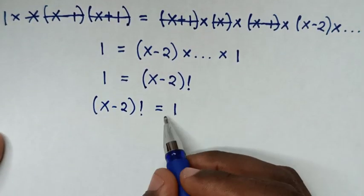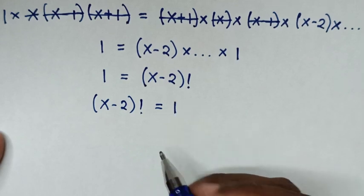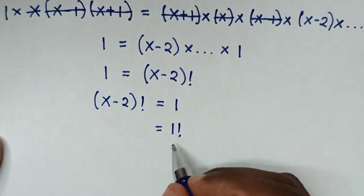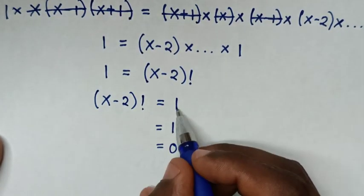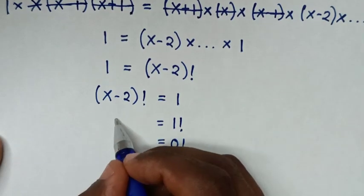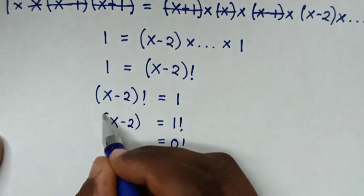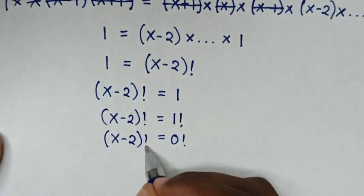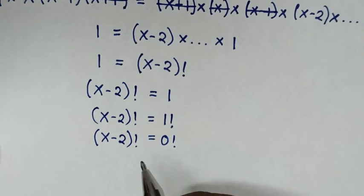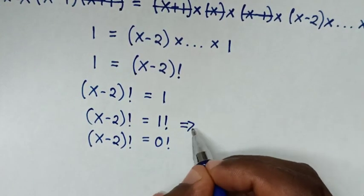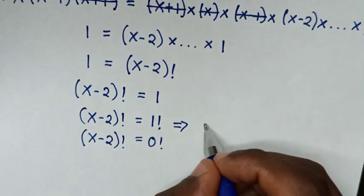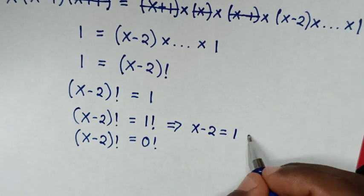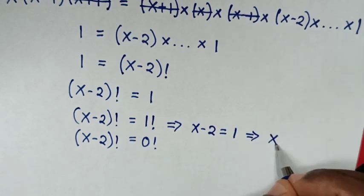Now since (x minus 2) factorial equals 1, we recall that 1 factorial equals 1, and also 0 factorial equals 1. So (x minus 2) factorial equals 1 factorial gives us x minus 2 equals 1, therefore x equals 3.